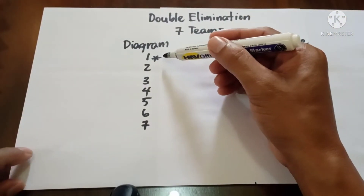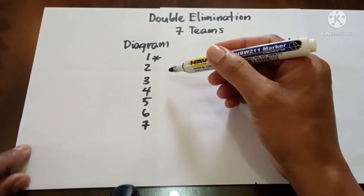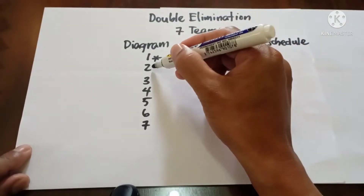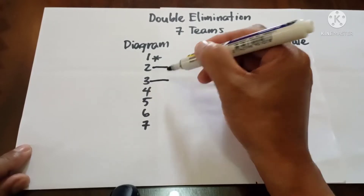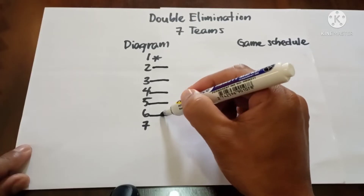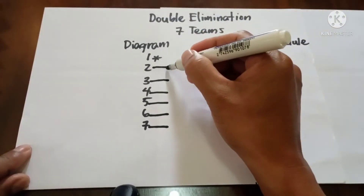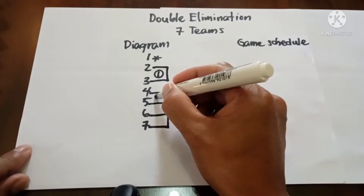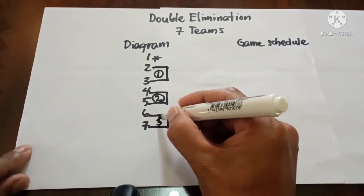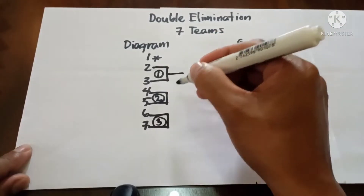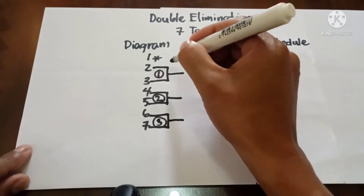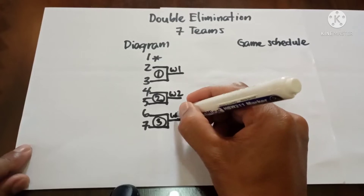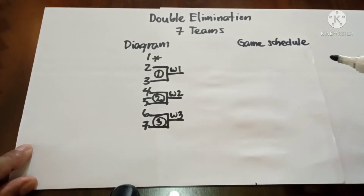Since we have one bye, we have six competing teams in the first round: one, two, three, four, five, six. From the top, we draw the vertical line, then the game numbers: Game 1, Game 2, Game 3. The results are Winner 1, Winner 2, Winner 3.